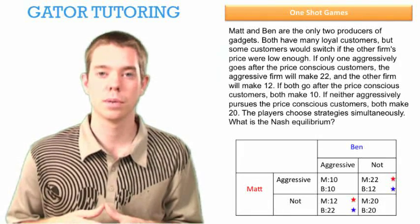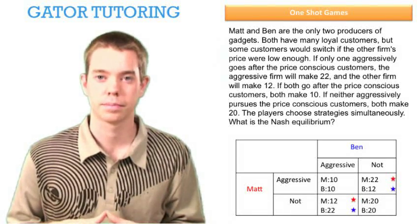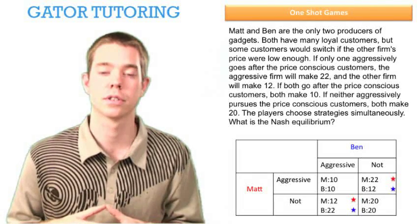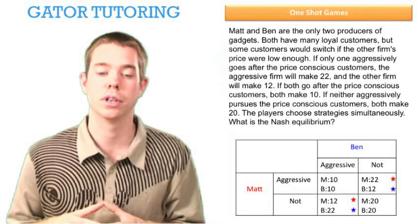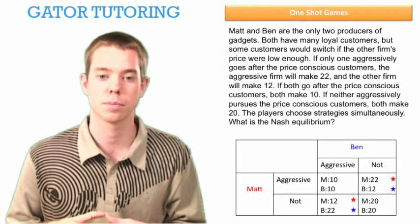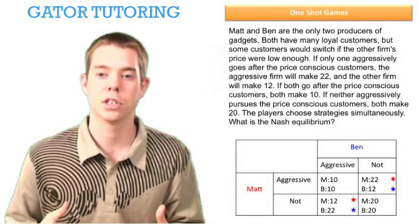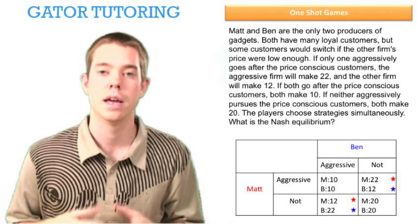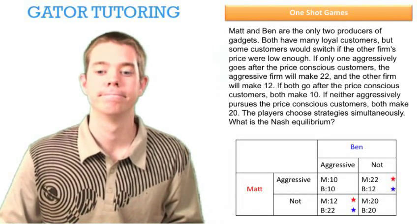A Nash equilibrium is where we have two stars in one box — it's an intersection of mutual best responses. Here we see that one Nash equilibrium is where Matt aggressively pursues price-conscious customers and Ben doesn't. Another Nash equilibrium is where Ben aggressively pursues price-conscious customers and Matt doesn't.